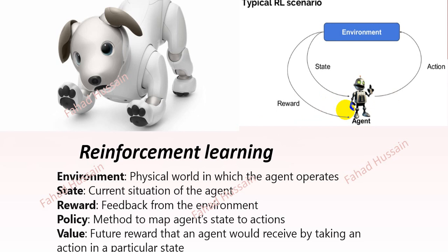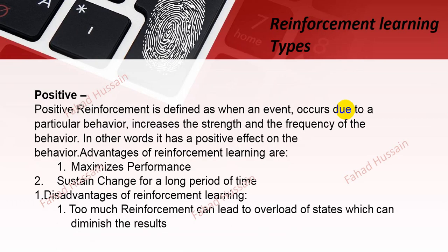To further explain: the environment is the physical world in which the agent operates. The state is the current situation of the agent — what situation it is in. Feedback is called a reward. Policy is the method to map agent state to action. Values are the cumulative rewards for the agent. As I mentioned, rewards are given in numeric form — either positive or negative. Positive means the agent did the right job; negative means we punish it so that next time it will avoid that action.